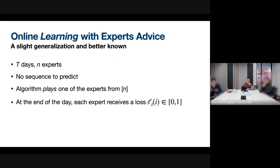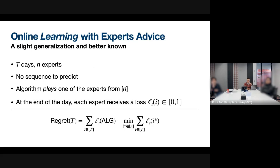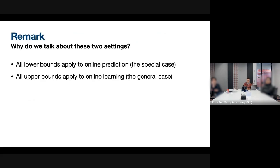A slight generalization is the online learning problem with expert advice. There's still T days and N experts, but rather than a binary sequence to predict, we can think of these experts as arms. Every day the algorithm plays one expert, and at the end of the day receives a loss vector — every expert incurs a loss continuously between zero and one. The algorithm's loss is the loss of the expert it played. All lower bounds apply to the simple binary prediction setting, but the main algorithmic result applies to the harder online learning setting.